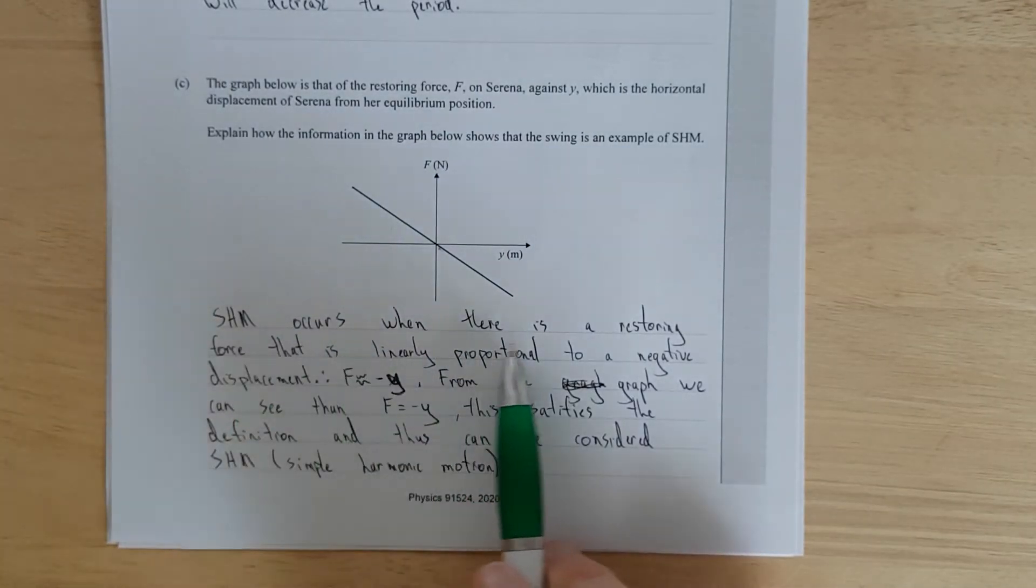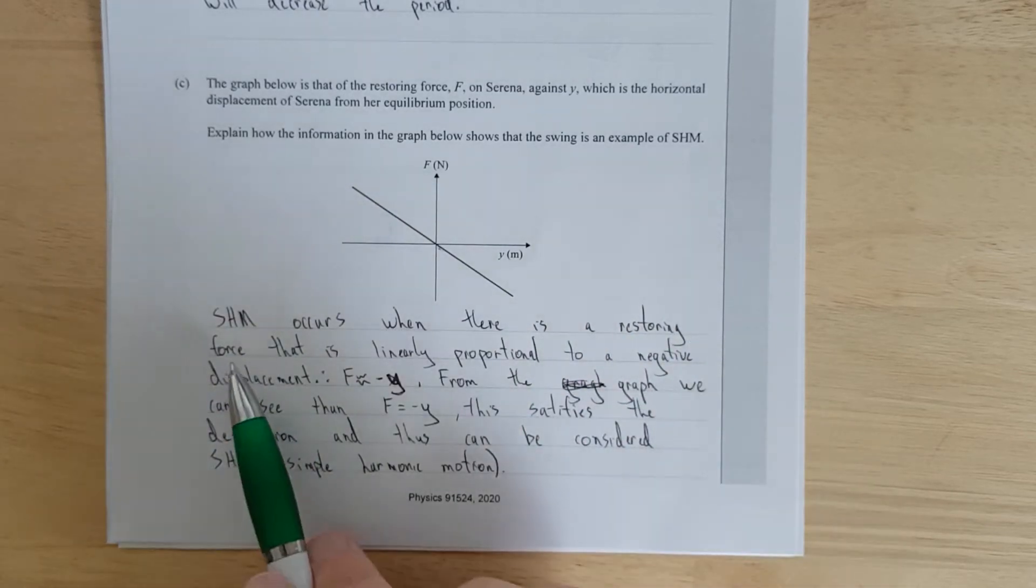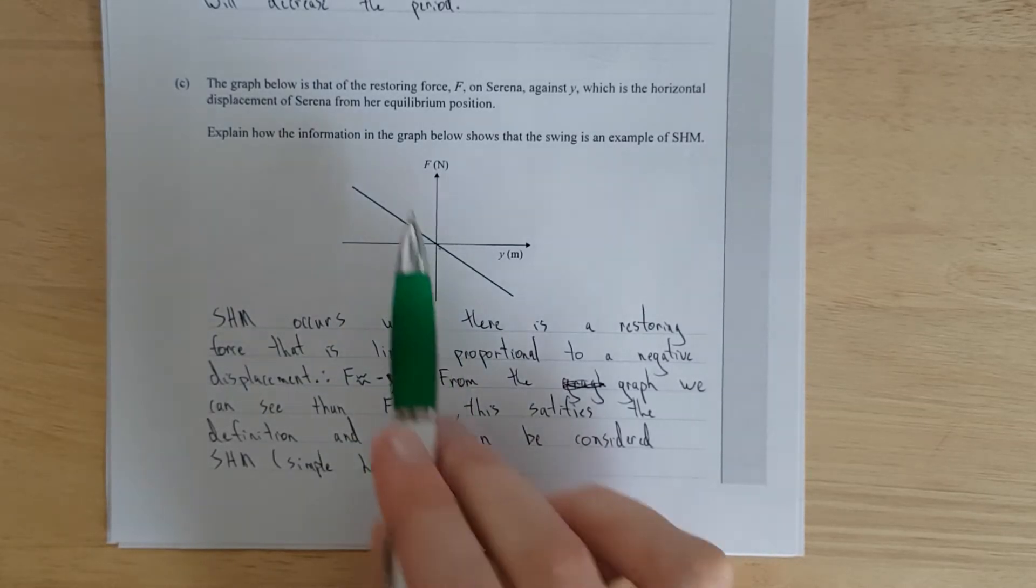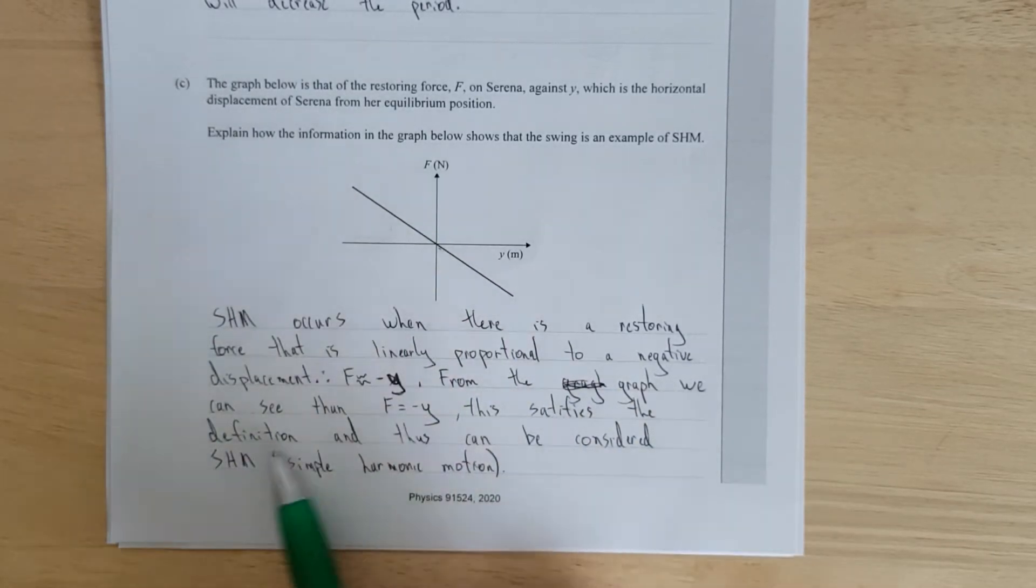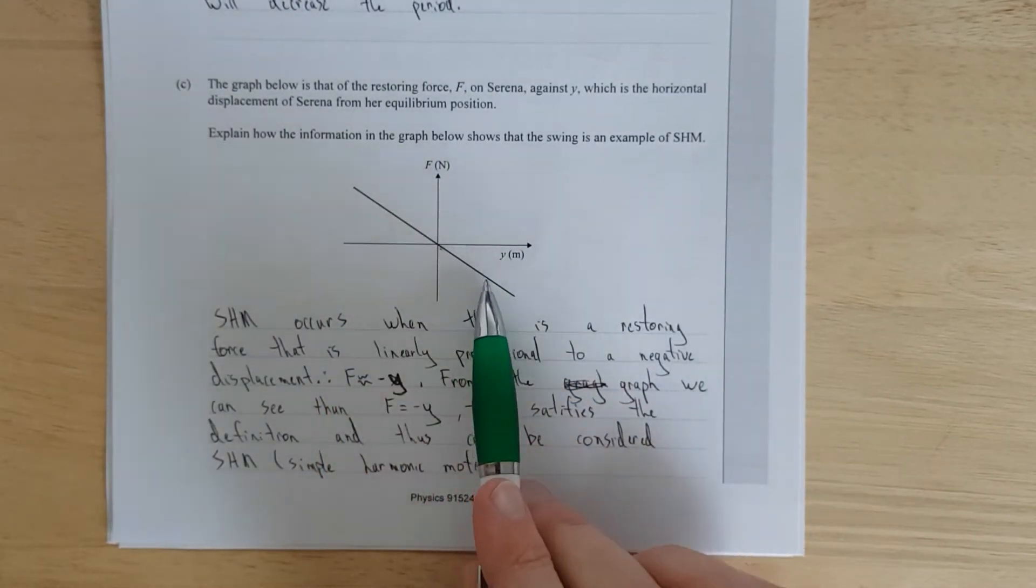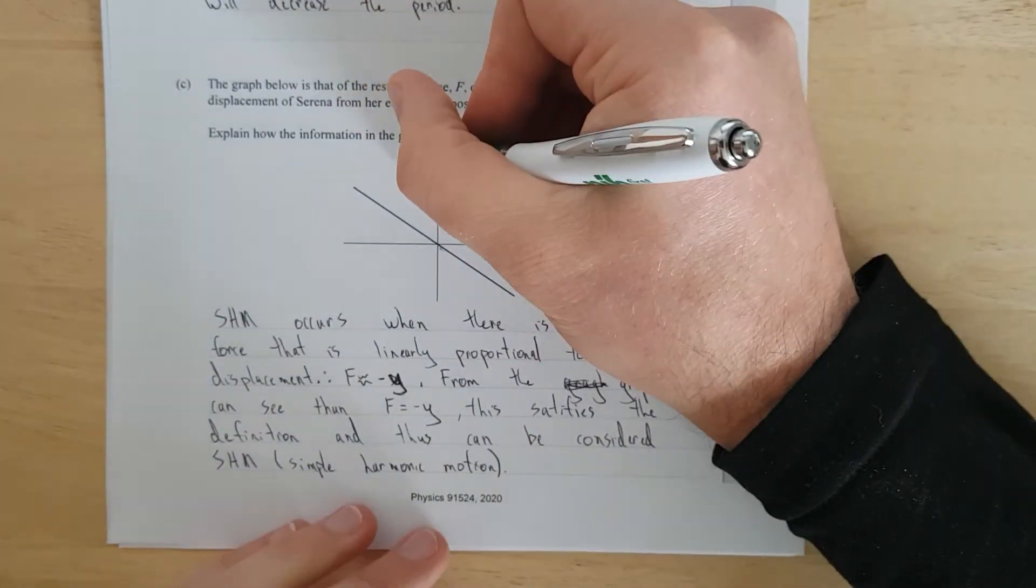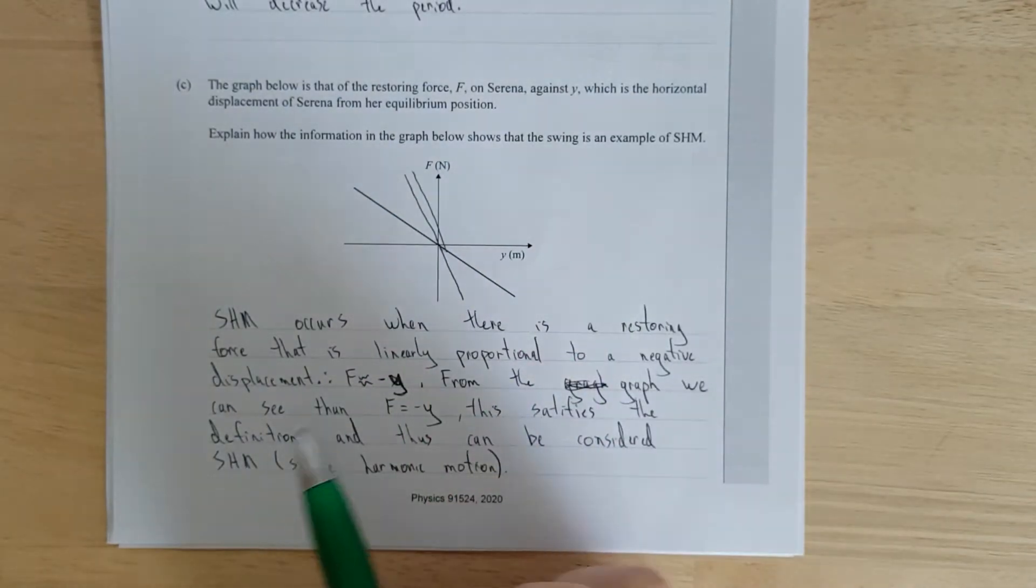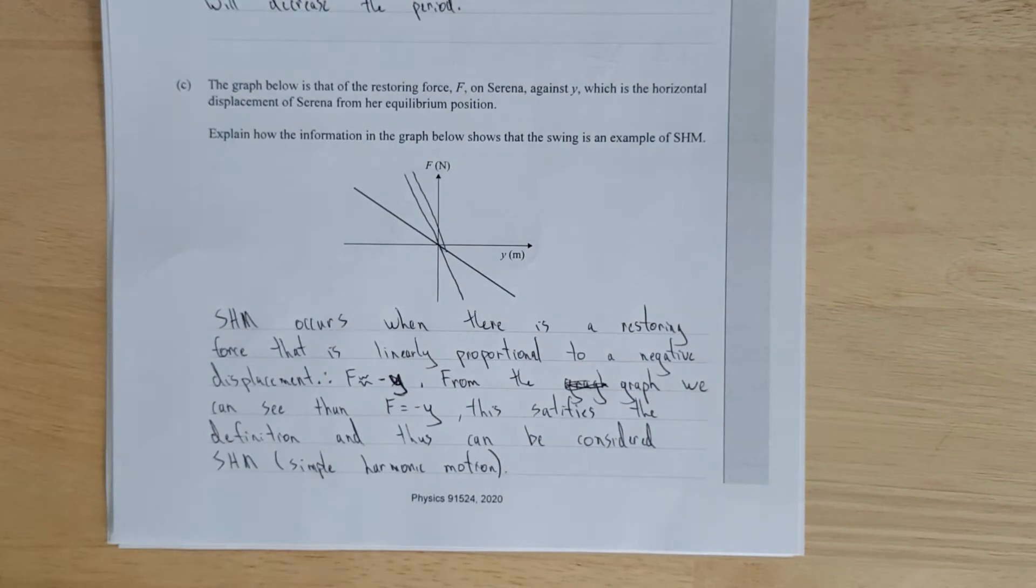So I've said, simple harmonic motion occurs when there is a restoring force that is linearly proportional to a negative displacement. In other words, F is proportional to negative Y. I'm super messy, I know. I had negative X, but I've used Y, so I swapped that out for Y. From the graph, we can see that F is equal to negative Y. I can't see any constant in there, it's not tilted up or tilted down. If there was some constant in there that's shifting at one way or the other, but that looks almost 45 degrees. This satisfies the definition and can be thus considered SHM.